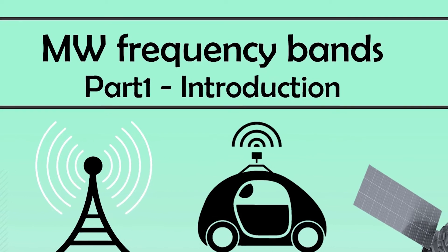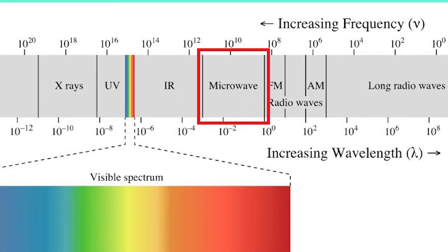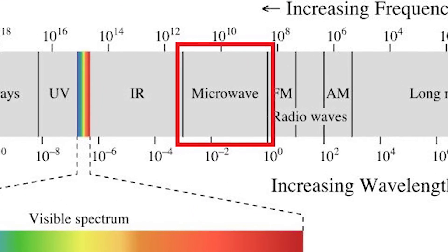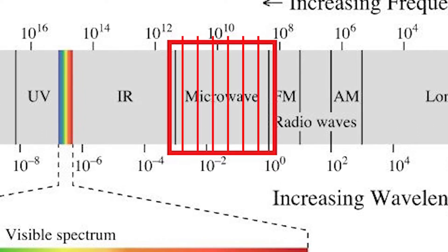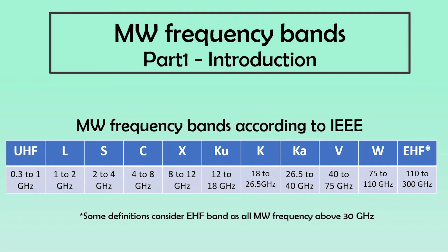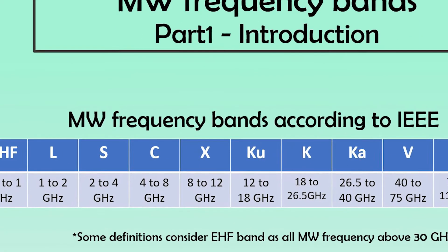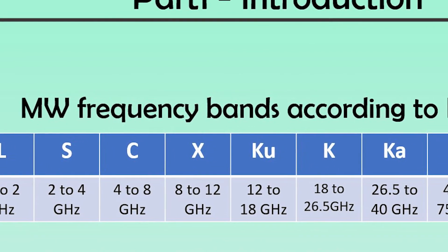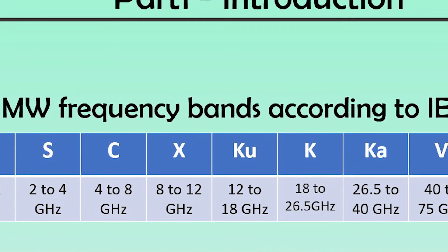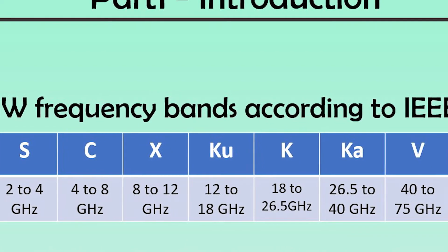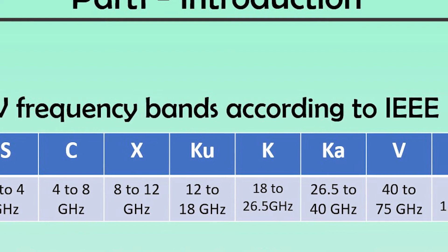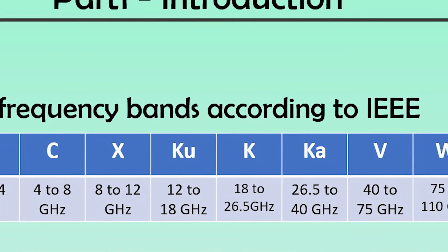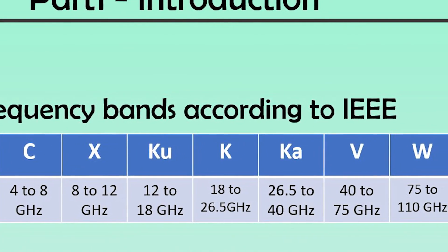Let us understand some more about microwave frequency bands. The commonly accepted frequency range of the microwave spectrum is from 300 MHz to 300 GHz, and this being such a large range, it is further divided into bands. According to the definition by the Institute of Electrical and Electronic Engineers, commonly known as IEEE, the frequency bands are named as follows in increasing order of frequency: L band from 1 to 2 GHz, S band from 2 to 4 GHz, C band from 4 to 8 GHz, X band from 8 to 12 GHz, Ku band from 12 to 18 GHz, K band from 18 to 26.5 GHz, Ka band from 26.5 to 40 GHz, V band from 40 to 75 GHz, and W band from 75 to 110 GHz.